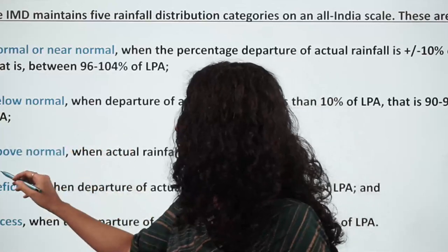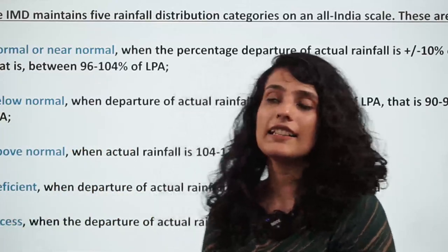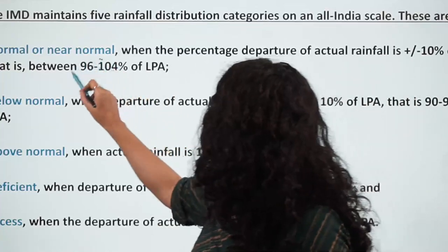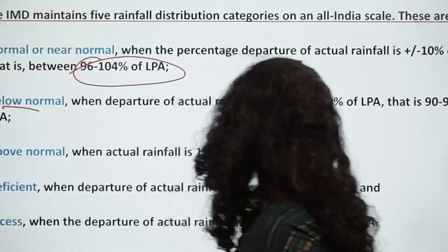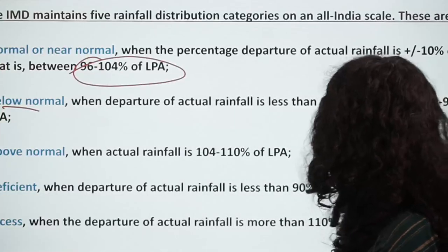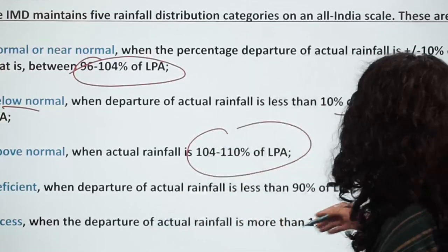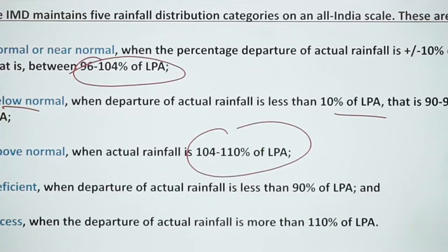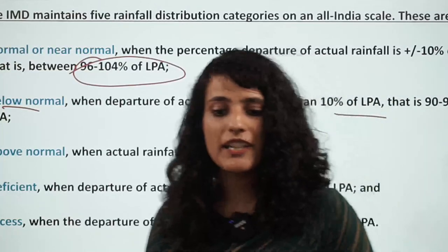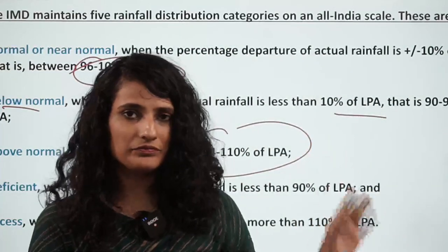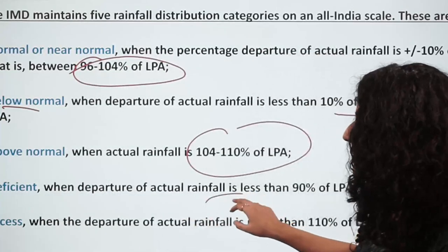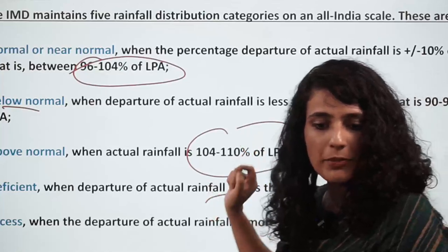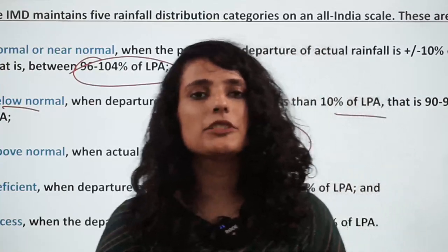LPA is decided on 5 scales: Normal, Below Normal, Above Normal, Deficient, and Excess. Normal rainfall is 96 to 104% of the LPA. Below normal is less than 90% of LPA. These are all self-explanatory categories. Aapko iska PDF zarur mil jayega Telegram pe, so do not worry.